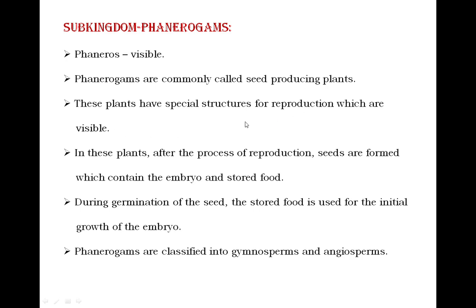Another character of Phanerogams is that these plants have special structures for reproduction which are visible — that structure is nothing but the flower, which is easily visible with our naked eyes. In the process of reproduction, seeds are formed. These seeds are mainly composed of two components: embryo and stored food.